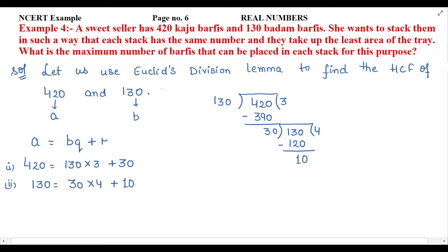The remainder is not zero, so this process continues further. Now we take 10 as divisor and 30 as dividend, because the old divisor becomes the dividend and the new remainder becomes the divisor. Now 10 × 3 equals 30, so remainder is zero.